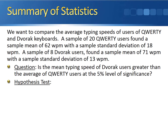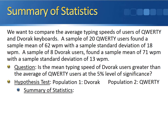Let's set up the hypothesis test. We don't have the population standard deviations, so the first condition checks out. Let's assume we're sampling from normally distributed populations, so the second condition holds as well. The sample mean for Dvorak users was 71 and for QWERTY users is 62. It's easier to keep the larger sample mean as population 1, so we'll use Dvorak users as population 1. The sample mean is 71, the sample variance is 13 squared which is 169, and the sample size is 8.